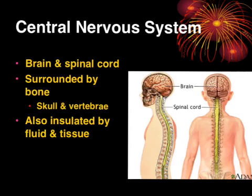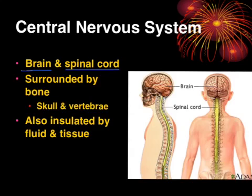The central nervous system consists of your brain and your spinal cord — really important structures. They're so important that they're surrounded by bone: your brain is surrounded by your skull, and your spinal cord runs between all of the vertebrae. They're also insulated by fluids and tissues called the meninges. If you've heard of meningitis, that's an infection of the meninges around your central nervous system. That's why a brain injury or a spinal cord injury can have such sweeping effects.